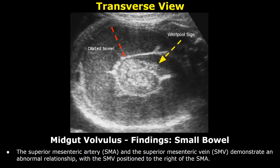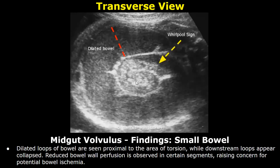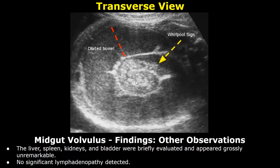The superior mesenteric artery and superior mesenteric vein demonstrate an abnormal relationship, with the superior mesenteric vein positioned to the right of the SMA. Dilated loops of bowel are seen proximal to the area of torsion, while downstream loops appear collapsed. Reduced bowel wall perfusion is observed in certain segments, raising concern for potential bowel ischemia. The rest of the study was normal.